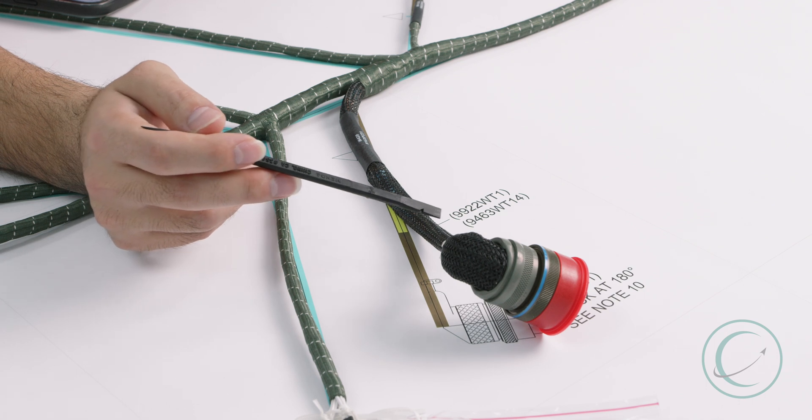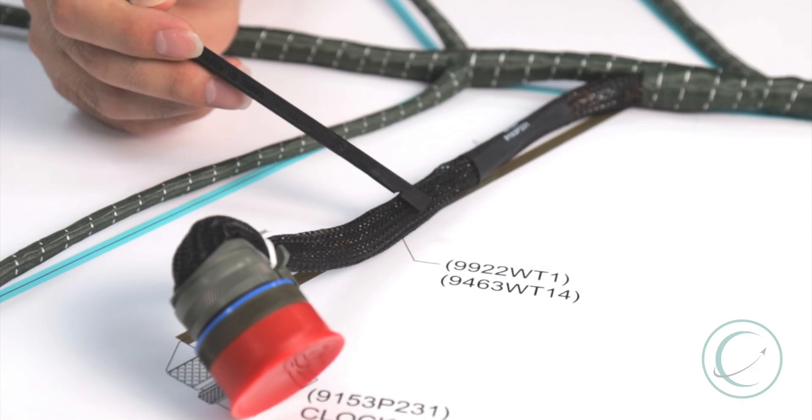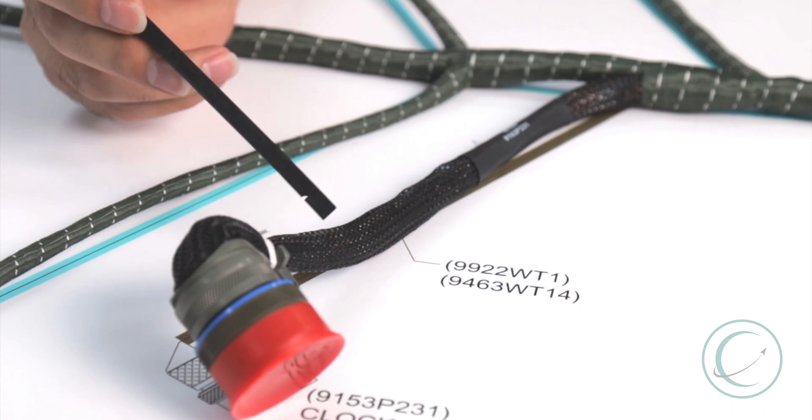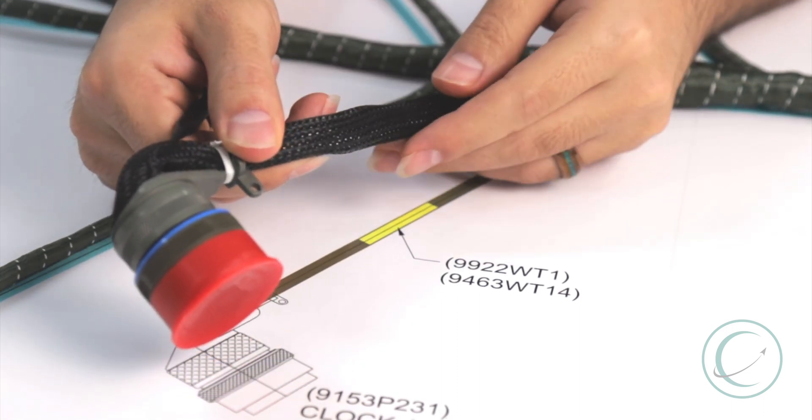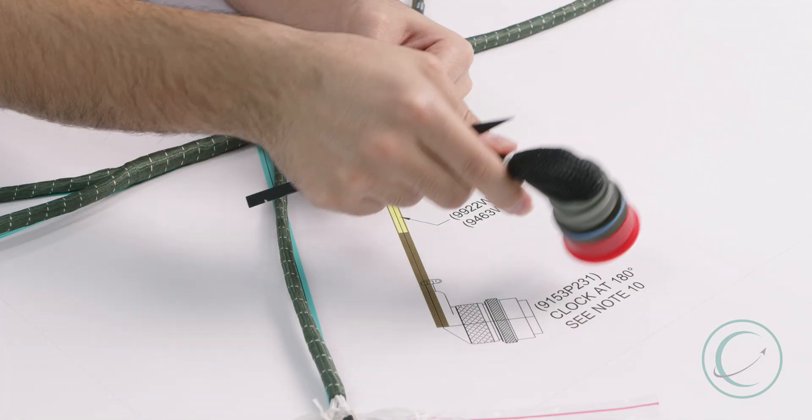For our next demonstration, we'll be looking at this black sleeving right here, also known as Xpando braid sleeving. The design and function of this part is to offer a good degree of chafing protection from any outside influence while offering a great degree of flexibility.